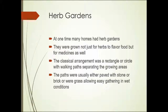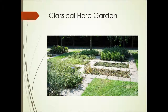The classical arrangement of an herb garden was a rectangular circle with walking paths separating different growing areas, in which different herbs would be grown for different purposes. The paths were usually either paved with stone or brick, or grass, to allow easy gathering of the herbs and medicinal plants in wet conditions. Here is a photograph of a classical herb garden — each individual area might contain more than one type of plant, but it's divided into small sections so one can easily walk the path and harvest from either side.